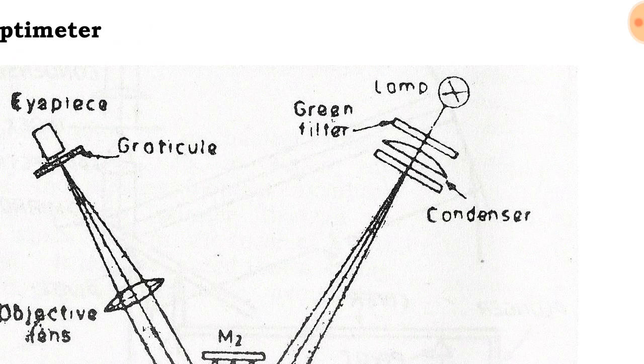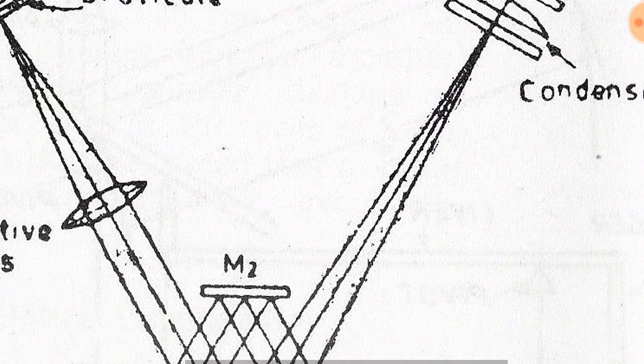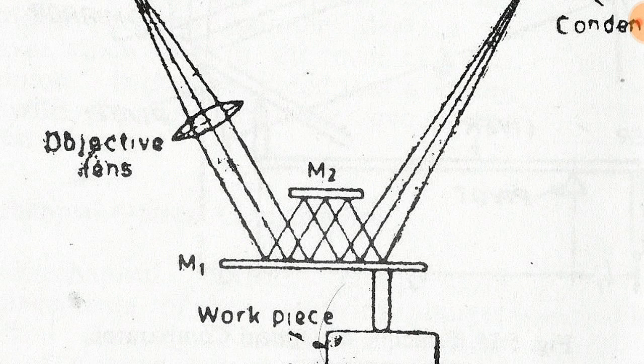The light then passes through a condenser via an index mark and projects it onto a movable mirror M1, and it is reflected to another fixed mirror M2 and then back again to the first movable mirror.